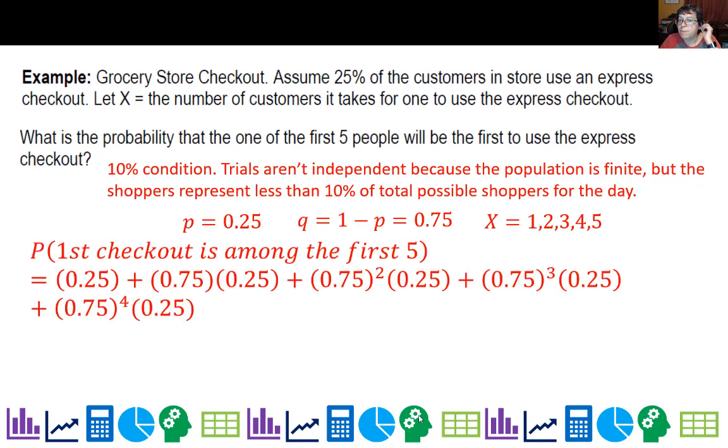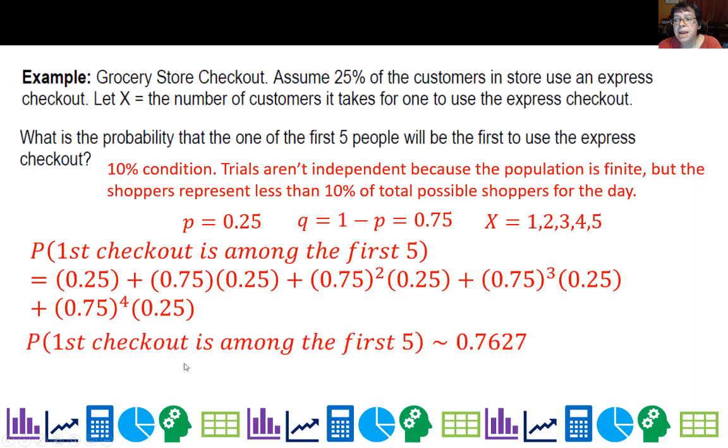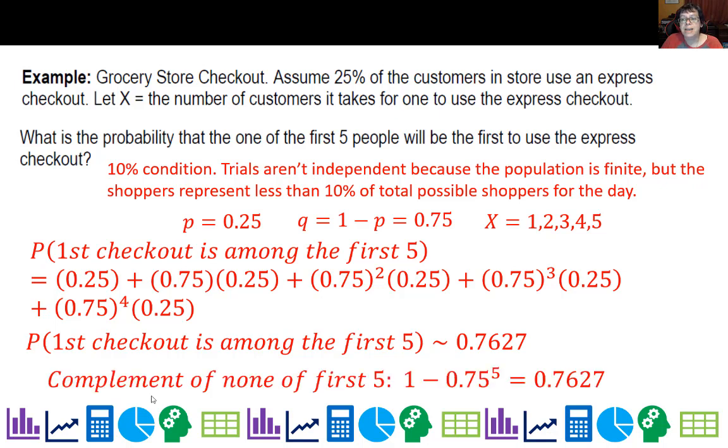I'll work out the probability that the first person is the first to checkout at 25%, then the second, third, fourth, and fifth. Add them all up and get about 76%. The other way is taking the complement: the probability that none of the first five do it is 0.75 to the fifth, subtract from 1, same answer.